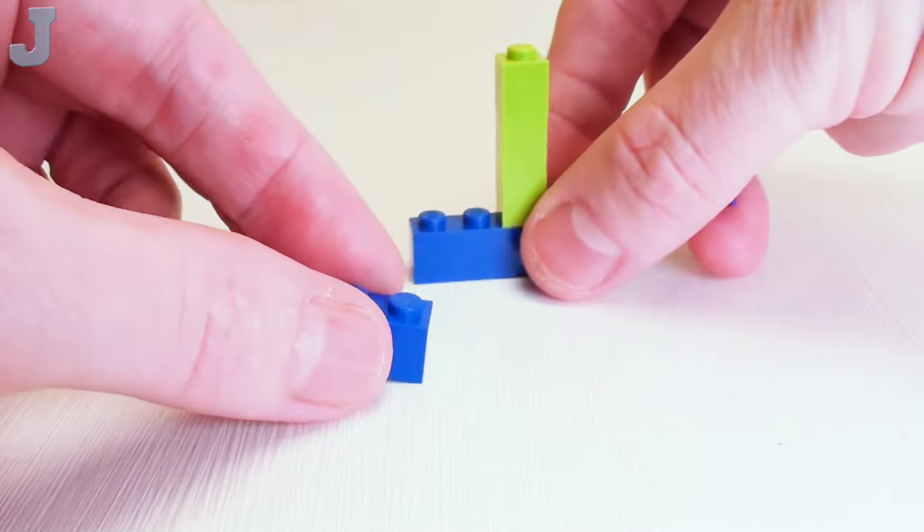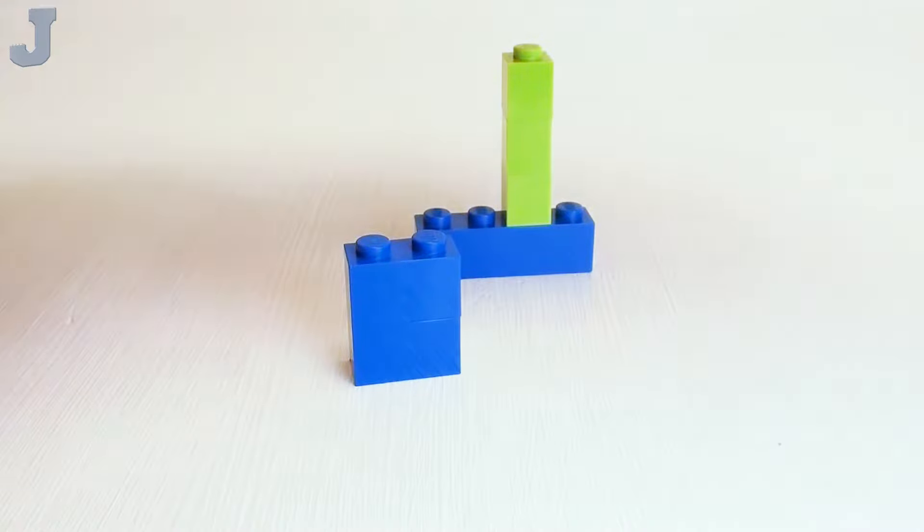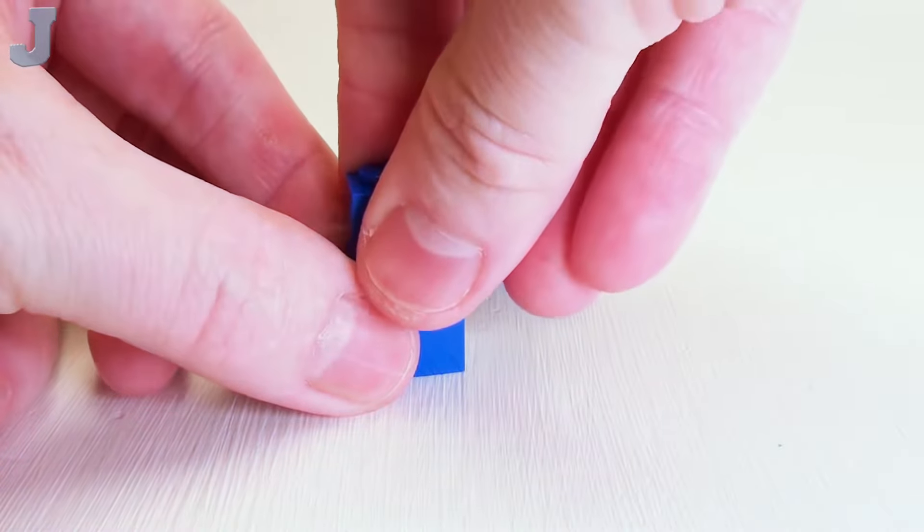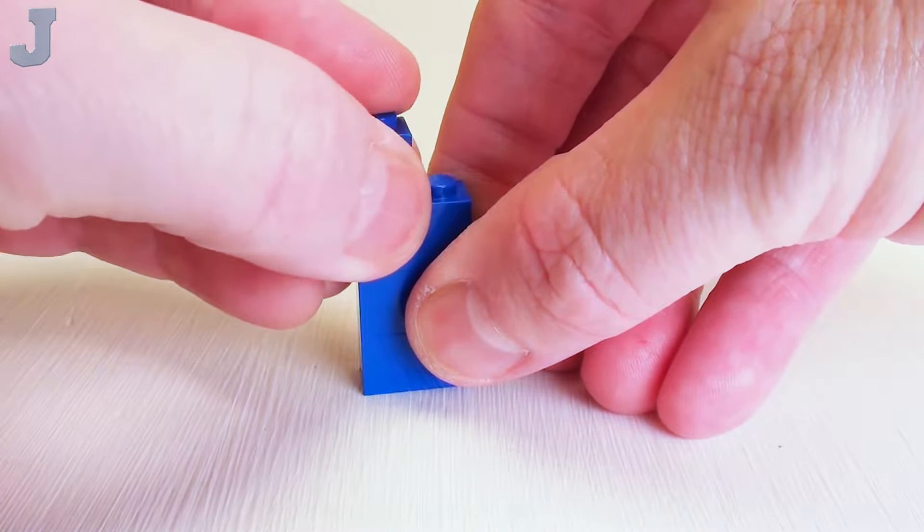Next, I want to take three 1 by 2 bricks. We're going to place these on top of one another and a 1 by 1 brick. I want to make two of these.